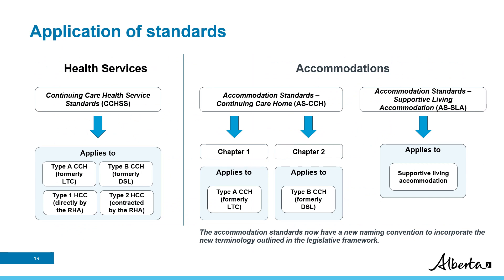Previous state is being maintained for the application of standards. Within the legislative framework, standards do not apply to Type C continuing care homes and Type 3 home and community care client-directed home care, as was the case in previous state. The continuing care health service standards apply to Type A and B continuing care homes as well as Type 1 and Type 2 home and community care. The accommodation standards now have a new naming convention: they are referred to as Accommodation Standards Continuing Care Home and Accommodation Standards Supportive Living Accommodation. The Accommodation Standards Continuing Care Home has two chapters — the first for Type A and the second for Type B — modeled after the long-term care accommodation standards and the supportive living accommodation standards respectively.